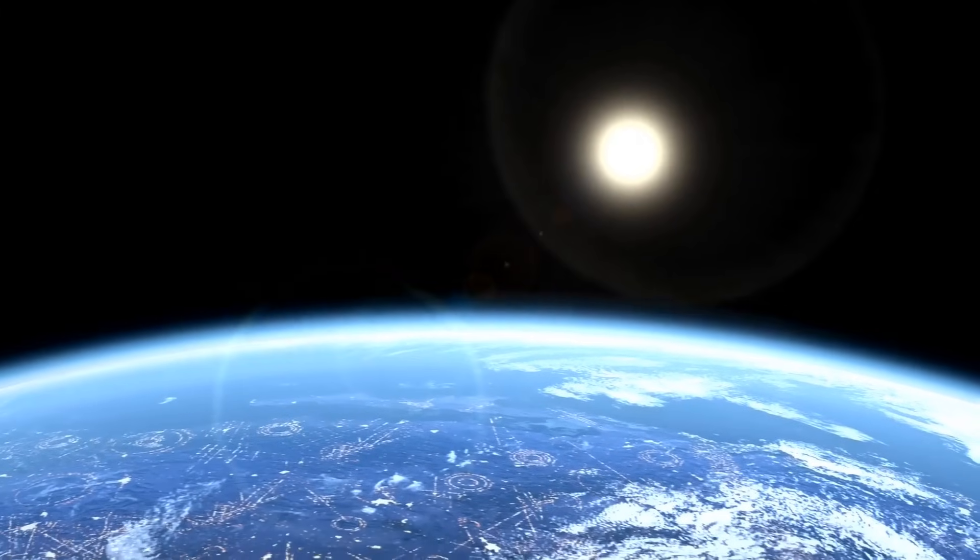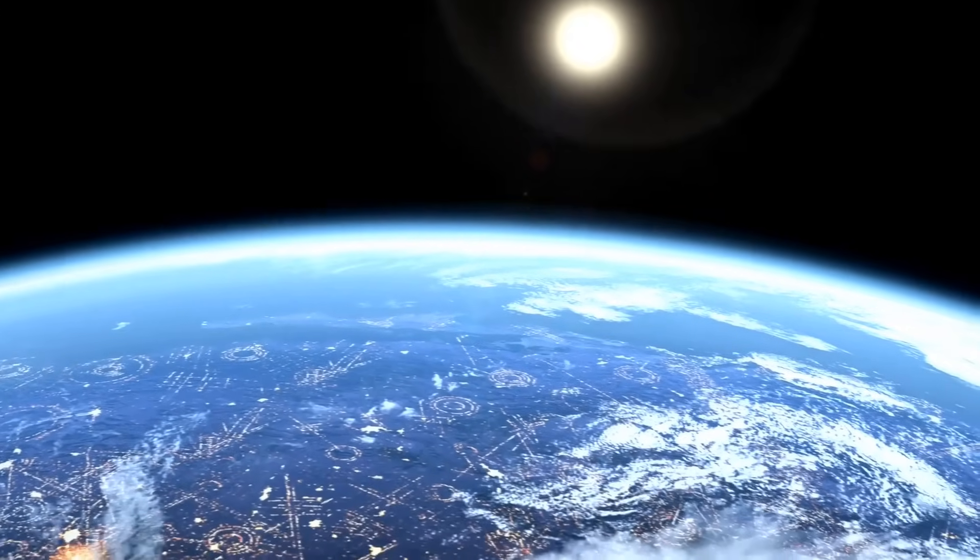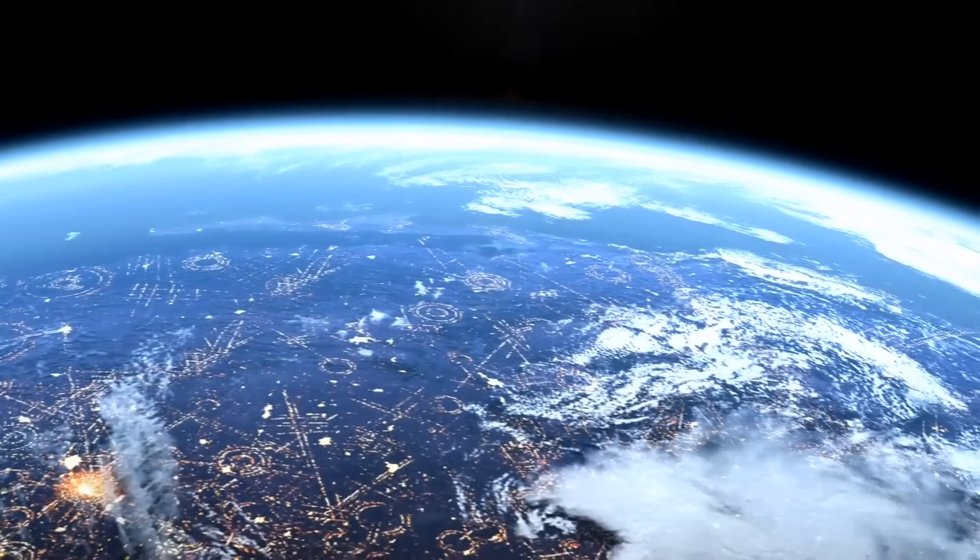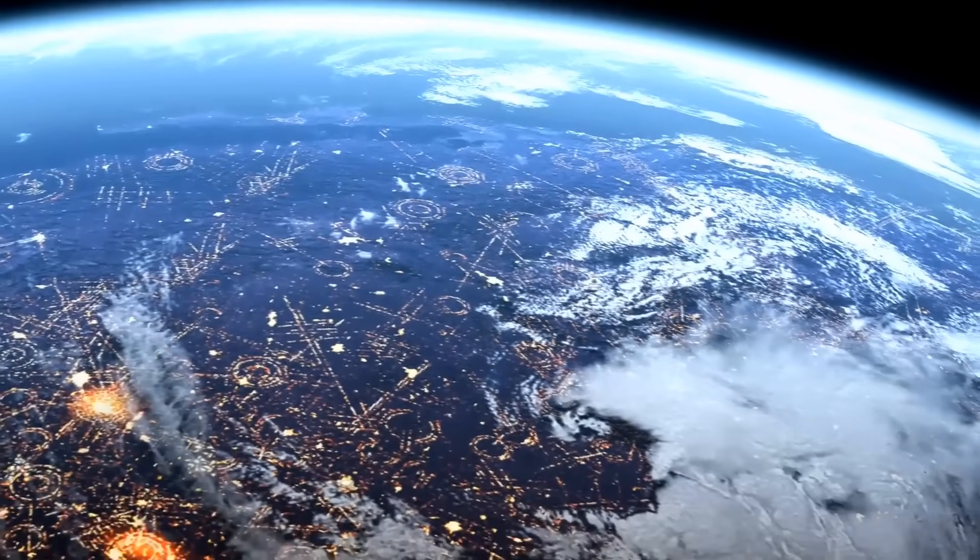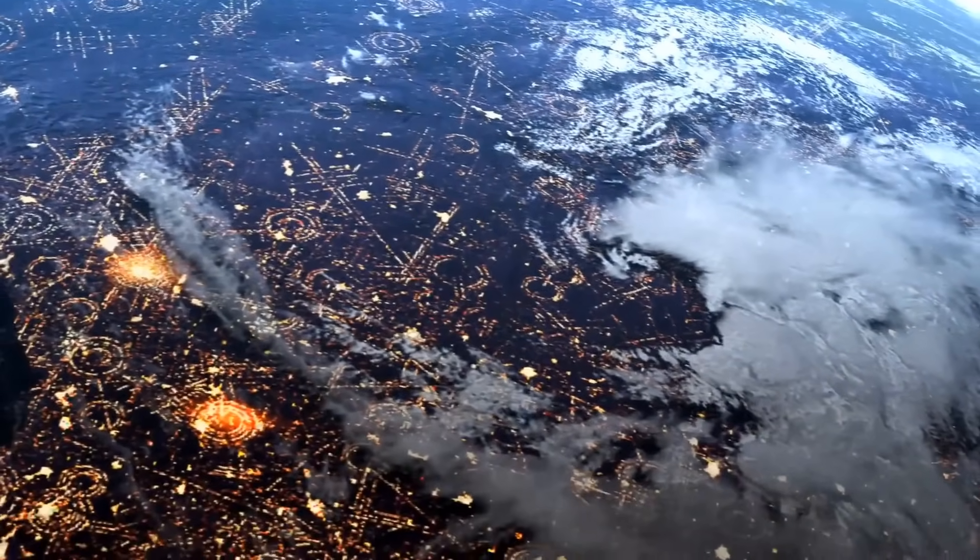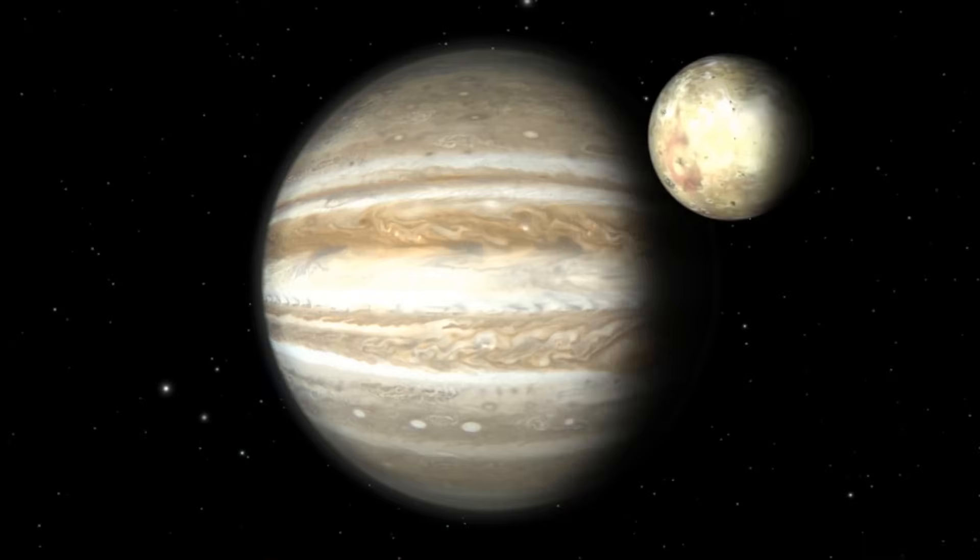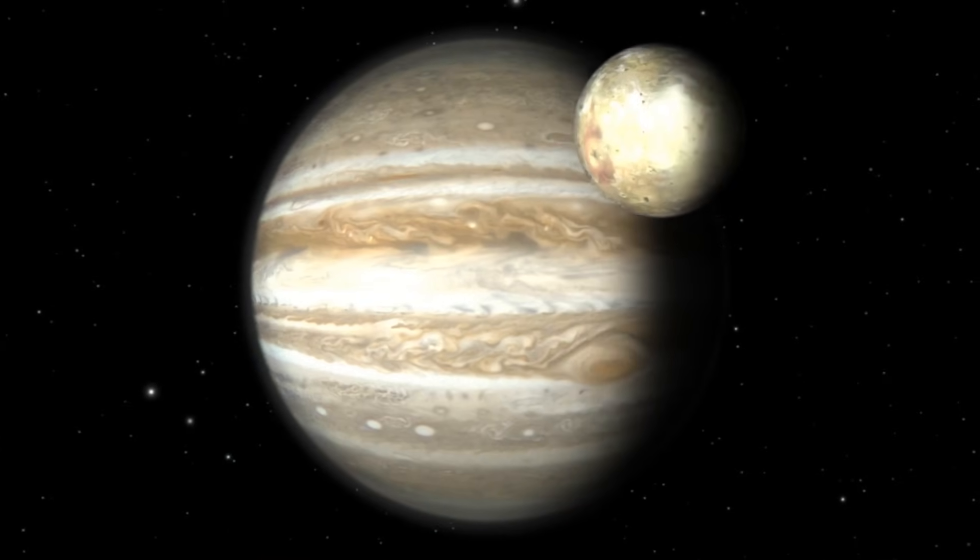So for example, there's a gravitational pull between yourself and the computer in front of you, but you don't notice it because it's so small that it's barely measurable. We do notice it when we look at bigger masses because the bigger the mass, the more gravitational pull it has. And so that's why we tend to really associate it with planets and moons and stars, because those masses are much much bigger.